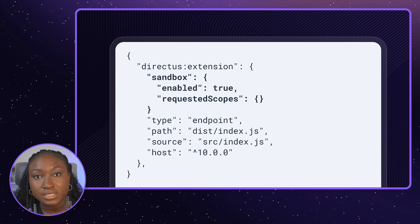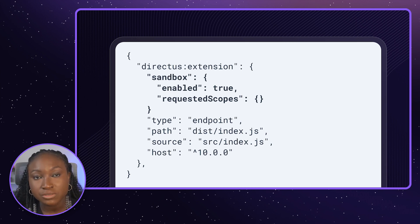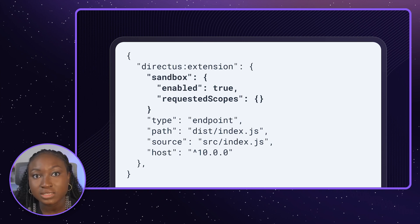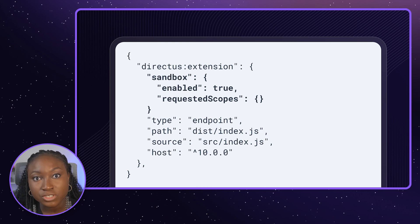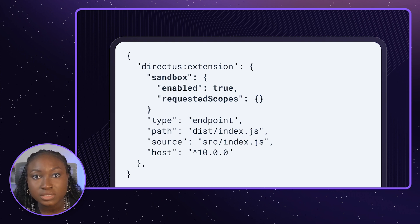Within that object, add two properties: enabled with the value of true, and requested scopes, which is an array of function scopes the extension needs access to. By using scopes and the sandbox functions exposed by Directors, isolates are granted new and specific capabilities.